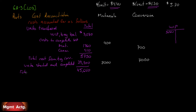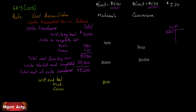Adding the two together, we get $45,650 — the total cost of units transferred. Now all we have to figure out is our total cost of work in process remaining. That's the ending balance. To figure it out we need equivalent units for materials and conversion. We're told ending work in process has 800 equivalent units for materials: 800 × $4.40 = $3,520. And 200 equivalent units for conversion: 200 × $1.30 = $260.